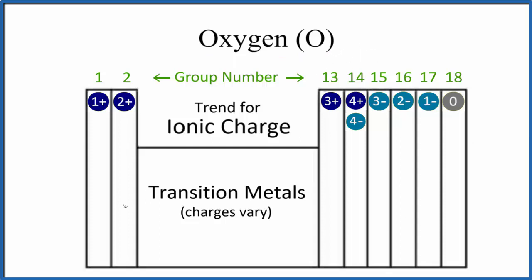So we have a general pattern here on the periodic table. Group 1, these elements, they form ions that are 1+. They lose one electron when they form ionic bonds. Group 2, those will be 2+, 3+, 4+, and so on.